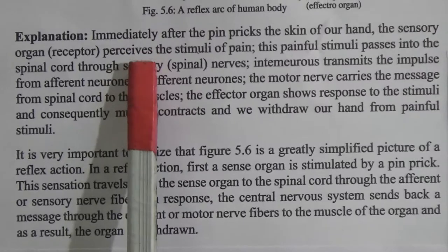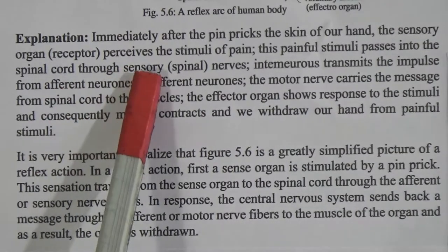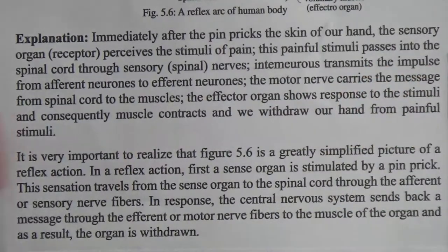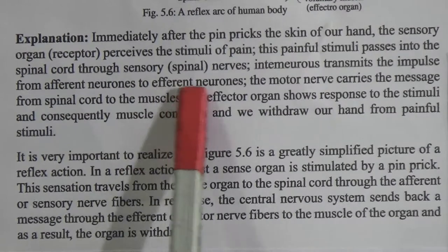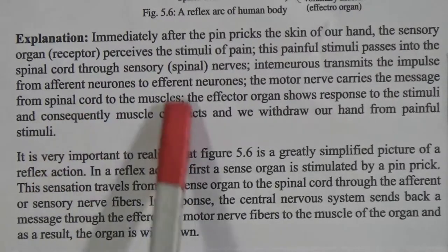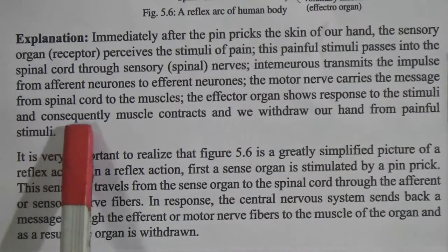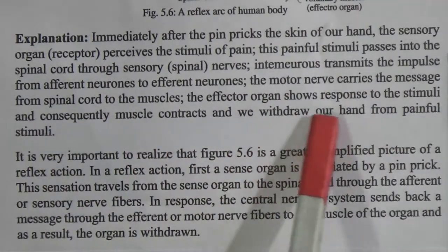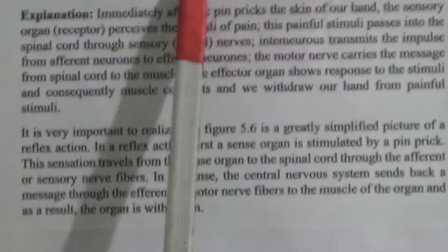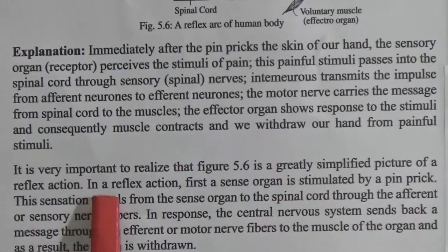Immediately after the pin pricks the skin of our hand, the sensory organ — that means the receptor — perceives the stimulus of pain. This painful stimulus passes into the spinal cord through the sensory or spinal nerves, and interneurons transmit the impulse from the afferent neurons to the efferent neurons. The motor nerves carry the message from the spinal cord to the muscle. The effector organ shows response to the stimulus, and consequently the muscle contracts and we withdraw our hand from the painful stimulus.